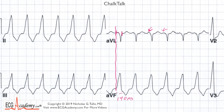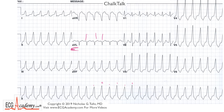You have to look at multiple leads. So what's the axis here? It's halfway between lead 1 and AVL — there's no true isoelectric. If it was isoelectric to lead 1 and positive in 2, 3, and F, that would give you an axis of +90. If it was isoelectric to AVL, that would give you +60. So the answer is in between — it's +75, which is normal. But it's wide and it kind of looks a little bit like a left bundle branch block in lead 1.